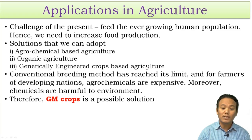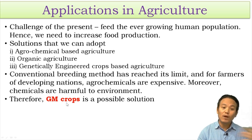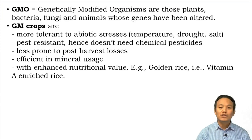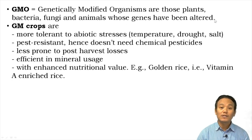Therefore, the third method — genetically engineered crop-based agriculture — in which we create genetically modified crops that can give better yield and withstand environmental stress, is considered a good possible solution. Genetically modified crops are one of the GMOs — genetically modified organisms — which are plants, bacteria, fungi, and animals whose genes have been altered artificially by scientists in the lab.